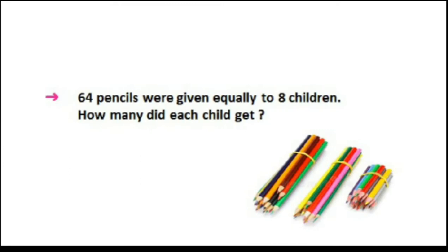Now here it is given: 64 pencils were given equally to 8 children. So total pencils were 64, and they were distributed among 8 children. How many did each child get — one child ko kitne pencils mili — that we have to find out. So pencils and children are given, and with the help of these we will make the statements.